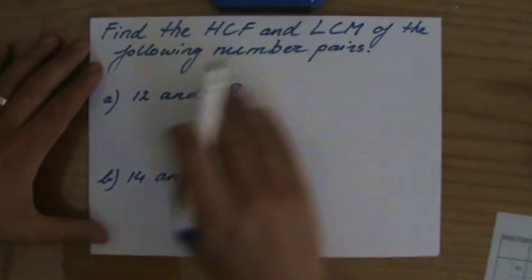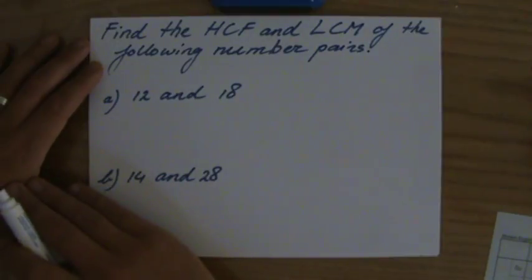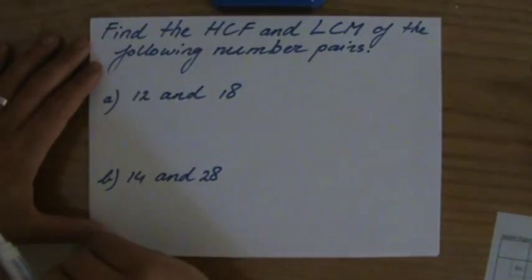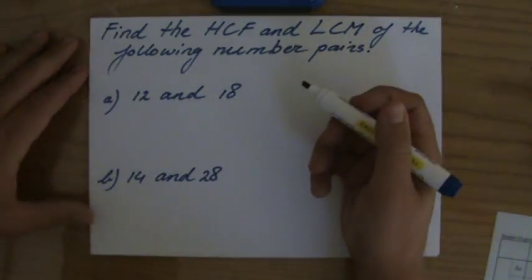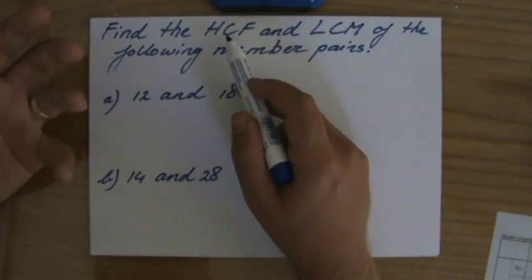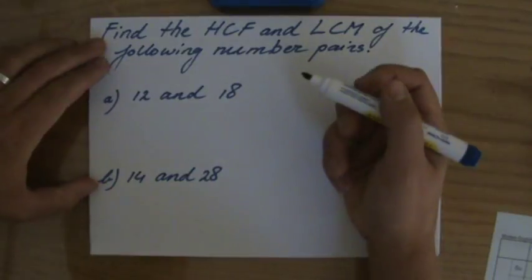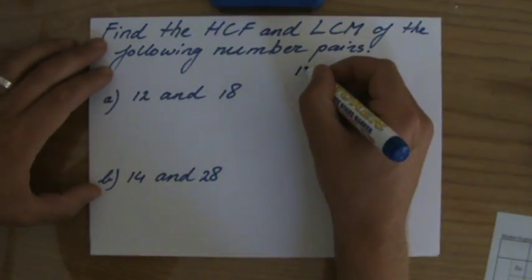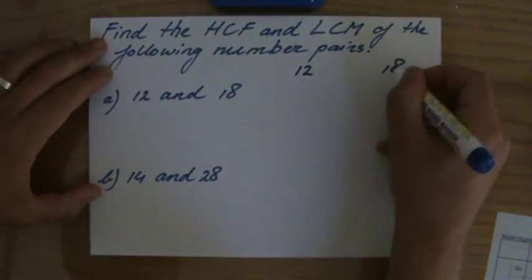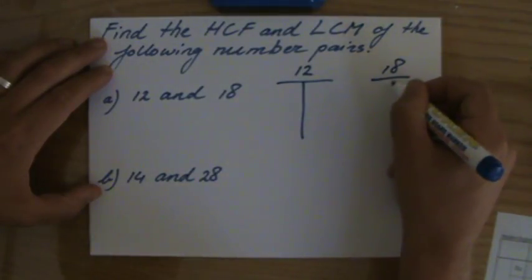They give me number pairs — for instance, 12 and 18 for question a — and I have to find the highest common factor, the HCF. Which factor do they have in common, and which is the highest one they both have? Let's write down the factors of 12 and 18, and I always write them in factor pairs.